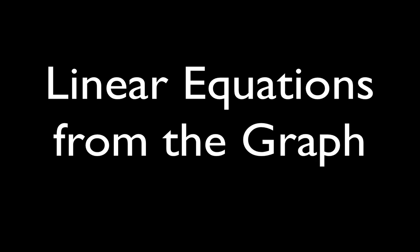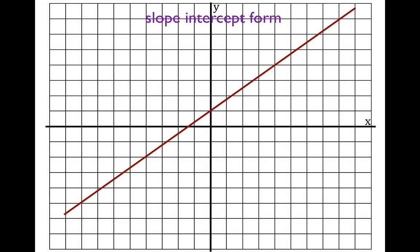In today's video I'm going to show you how to write the linear equation of a line if you're given the graph of that line. This is the first problem we're going to work on, this brown line right here. We're going to write all of these equations in the slope-intercept form: y equals mx plus b.